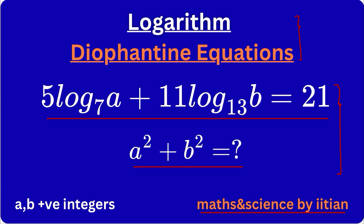Here we will be using number theory theorems. We will not only solve the equation for A and B, but also find A squared plus B squared. We will also check whether the equation has a unique solution, multiple solutions, or infinite solutions. Only one equation is given with two variables, but that does not mean it always gives infinite solutions, because there is a constraint that A and B are positive integers.